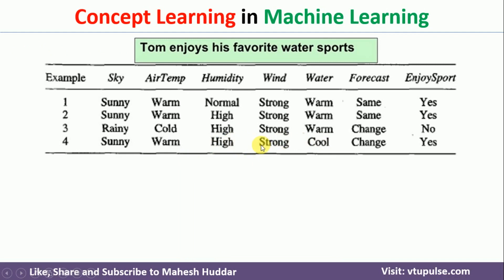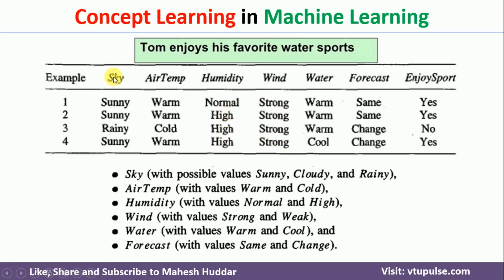Now let us try to represent all possible instances or concepts. In this case we have been given only four examples. Before we identify the potential hypothesis, we first need to know how many possible instances are possible. We need to know the possible values for each attribute: sky has three values — sunny, cloudy and rainy; air temperature has warm and cold; humidity has normal and high; wind has strong and weak; water has warm and cool; forecast has same and change. Given these attribute values, we need to represent how many possible concepts there are.